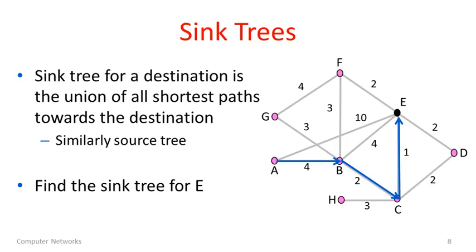So let's see if we can find the sink tree for E. So that's all destinations going towards E. You can also similarly, in our formulation, find source trees, which would be all of the paths from one node, say E again, out to all other nodes. In fact, given that we're looking at bidirectional links with equal cost, the sink tree and the source tree will basically be the same. They'll just be pointing in different directions to go towards the root or away from the root. And I'll use them a little interchangeably too, depending on what is most convenient.